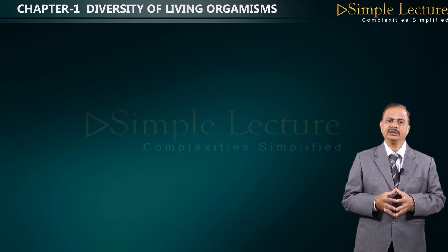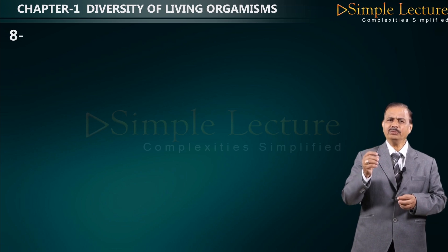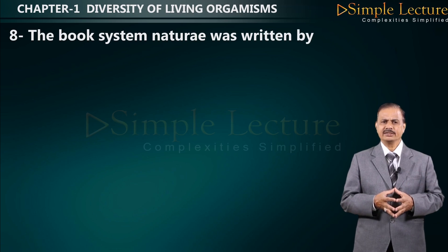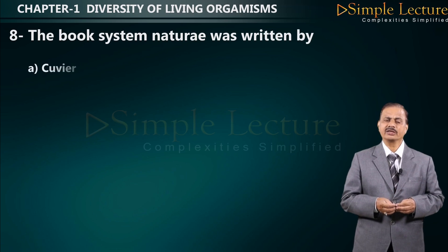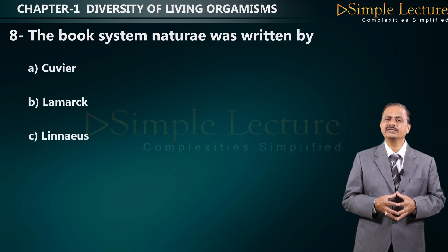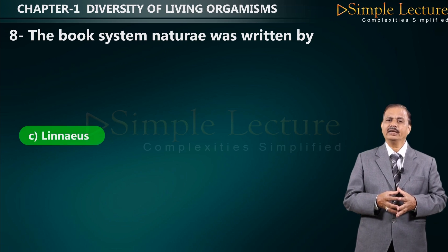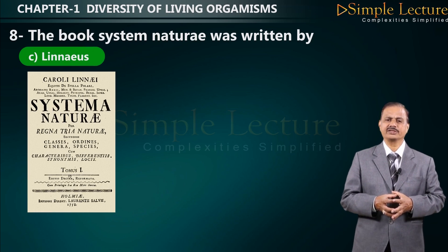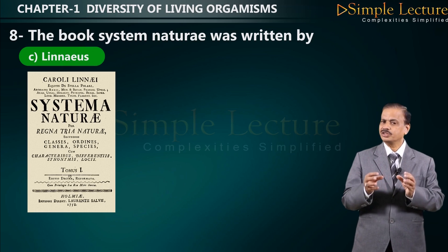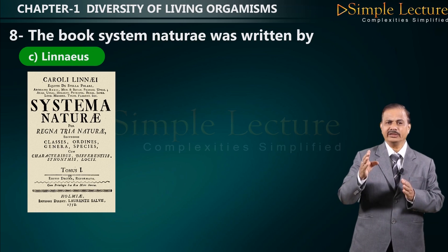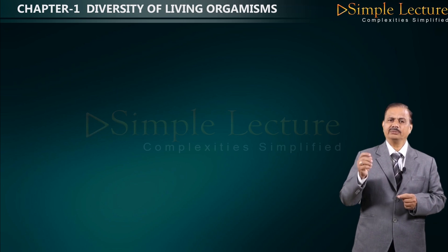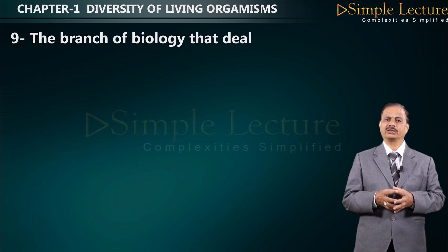Question number eight: the book Systema Naturae was written by — options are A: Cuvier, B: Lamarck, C: Linnaeus, D: Aristotle. The correct answer is C: Carolus Linnaeus, who wrote Systema Naturae and introduced the concept of binomial nomenclature.